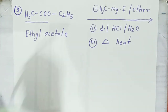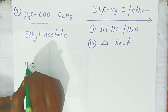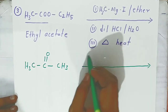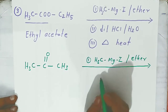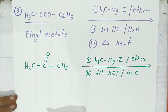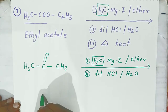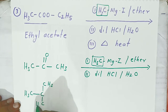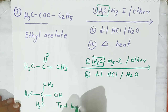Heating is required; without heating the product will not form. This ethyl acetate first forms acetone (CH3COCH3). Again you add methyl magnesium iodide in the presence of ether, then add dilute HCl, dissolve in water, and heat. The acetone converts into tertiary butyl alcohol — the methyl group keeps adding and the double bond becomes a single bond, giving C(CH3)3OH, which is tertiary butyl alcohol.